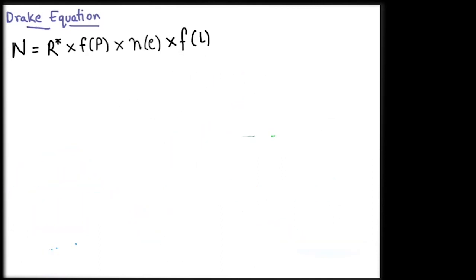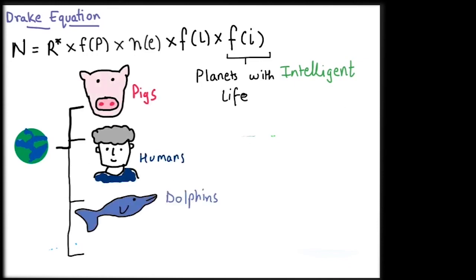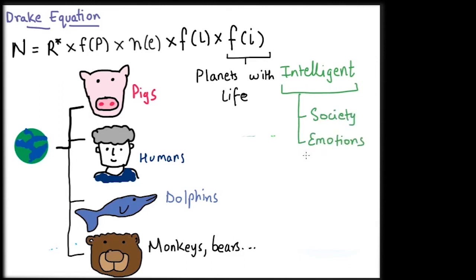The fifth term in this equation is F of I, which is the fraction of these planets with life, where life is intelligent like ours. Even on Earth, we have millions of species, but only a few of them can be considered intelligent. Intelligence can be measured in various ways: complexity of society, emotional spectrum, problem solving, etc.